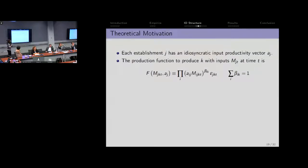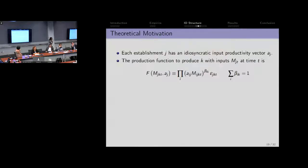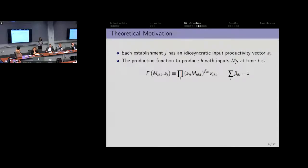This is also theoretically motivated. Suppose we have a Cobb-Douglas production function. The A_IJ terms are essentially these idiosyncratic firm-establishment input productivity shocks that you're born with or reveal yourself to be good at. If you're a Cobb-Douglas firm, A_IJ gets interacted with the Cobb-Douglas weight parameter, and therefore it's specific to the product that you're making.